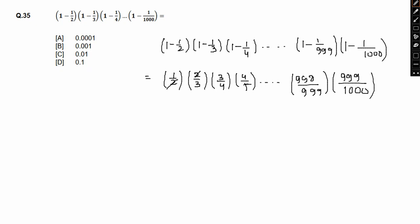this and this cancels out. This and this cancels out. This and this cancels out. 5 will also get cancelled out. Similarly, 998 cancels out. And all we'll be left with is 1 by 1000, that is 0.001, which will be